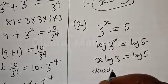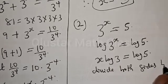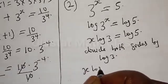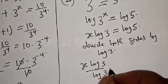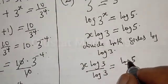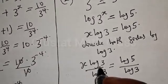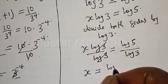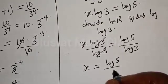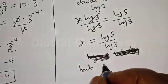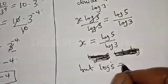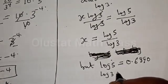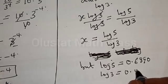Now let's divide both sides by log 3. We have x log 3 divided by log 3 equals log 5 divided by log 3. Log 3 cancels, then x is equal to log 5 divided by log 3. Log 5 is equal to 0.6990 and log 3 is equal to 0.4771.